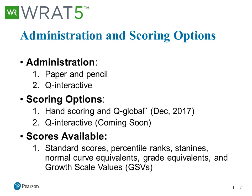Along with the administration options, there are two different scoring options. The first is hand scoring — you're able to do that traditionally as you have in the past. Or you can use Q-Global, which is an online scoring and reporting system where you put in the raw scores, it tracks your clients' or students' demographic data, and gives you the standard scores. With Q-interactive, scoring is automatic — you don't actually have to put the test scores anywhere else; it will automatically convert those.